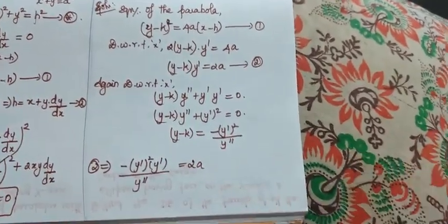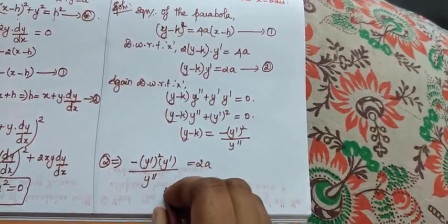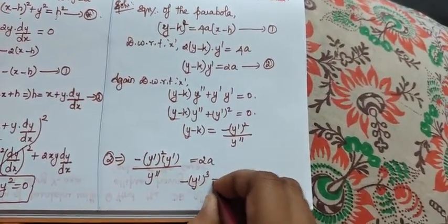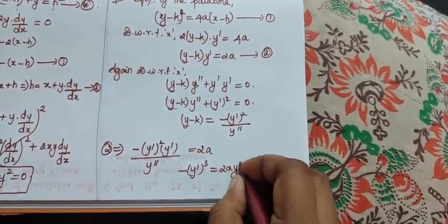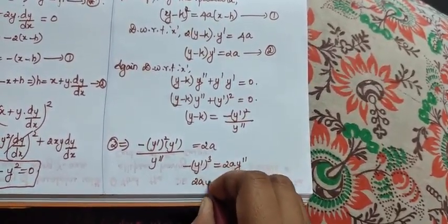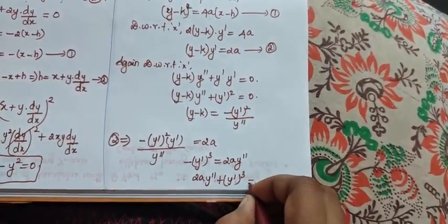All our sum must be such that the final answer should not contain that constant, that is our motive. Bring it to this side, which is -(y')³ = 2a y''. So our answer is 2a y'' + (y')³ = 0.